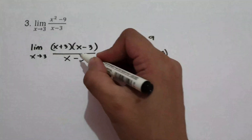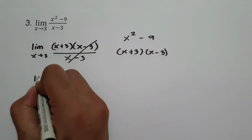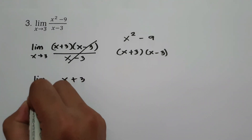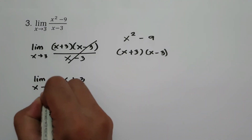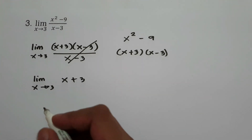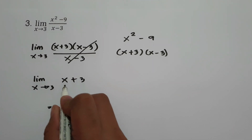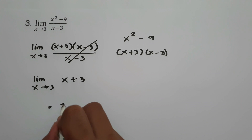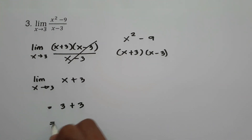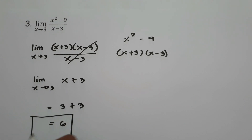We have the limit of x plus 3 times x minus 3 all over x minus 3 as x approaches 3. We cancel x minus 3, leaving the limit of x plus 3 as x approaches 3. Substituting x equals 3: 3 plus 3 gives us 6. So our answer is 6.